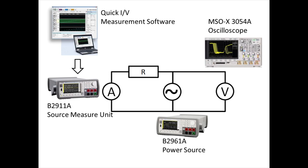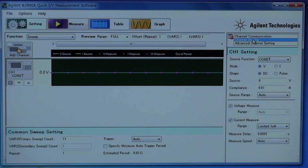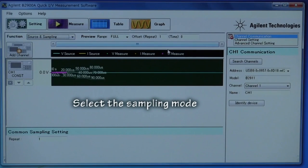We can also control the Agilent B2911A with Quick IB software. With this software, we can measure current waveforms from an external computer, and it's the easiest way to measure current waveforms. To measure current waveforms, we need to select sampling mode and then change the channel settings.